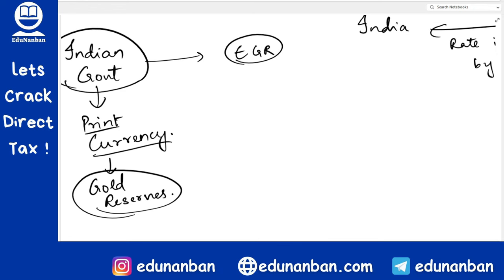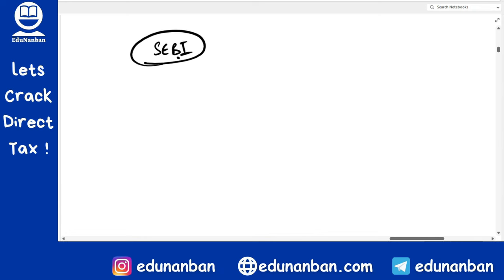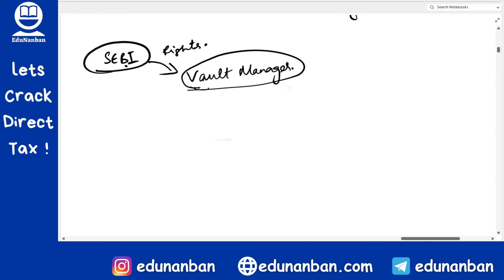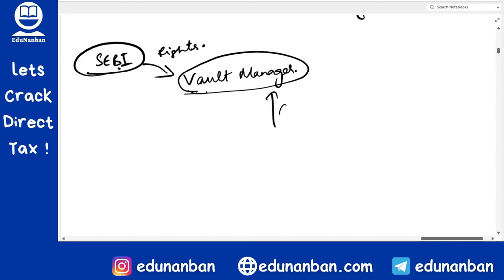How does EGR work? There is an organization called SEBI. SEBI gives the rights of issuing EGR to a Vault Manager. If a company satisfies certain conditions and registers with SEBI, it can become a Vault Manager. The Vault Manager will collect gold from people and give Electronic Gold Receipts to those people.